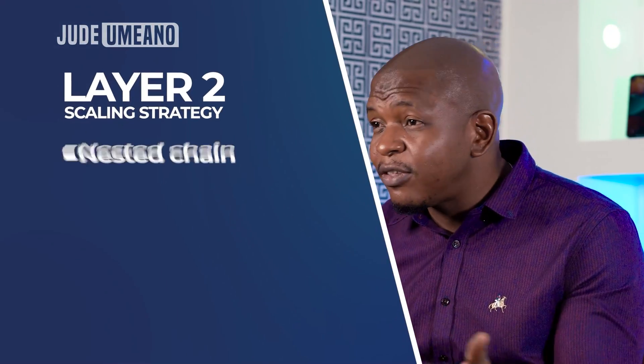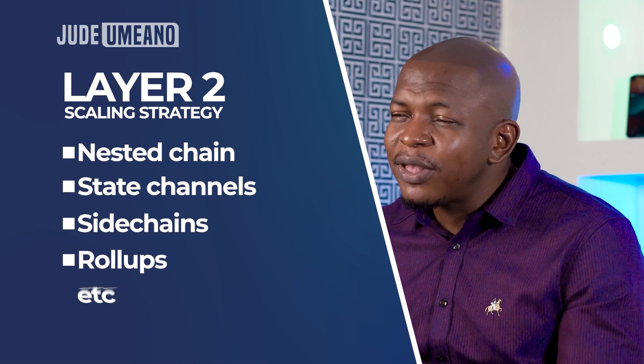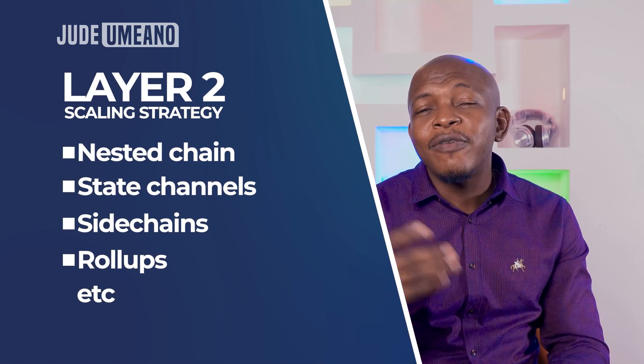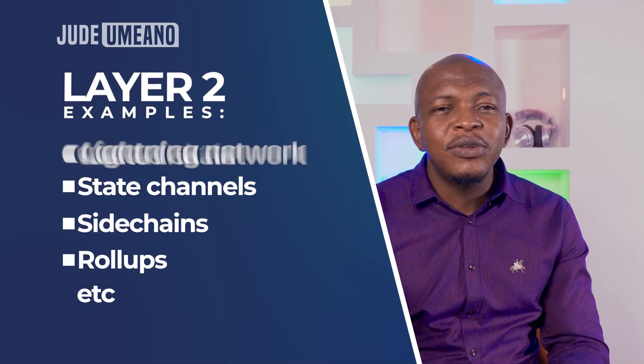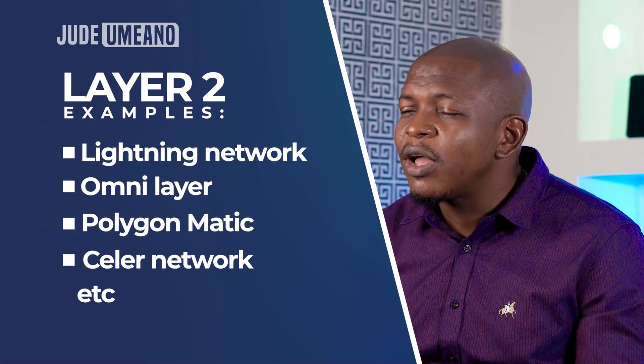With a higher volume of transactions handled, there are various layer two scaling strategies, including state channels, sidechains, rollups, and so on. Examples of layer 2 networks include Lightning Network, OmniLayer, Polygon, Stellar Network, and so on.